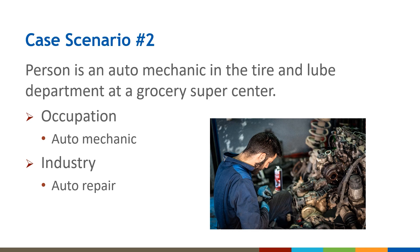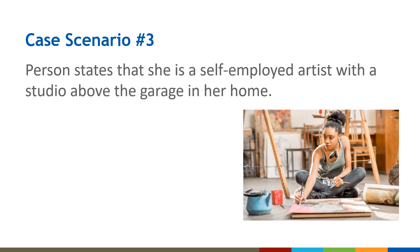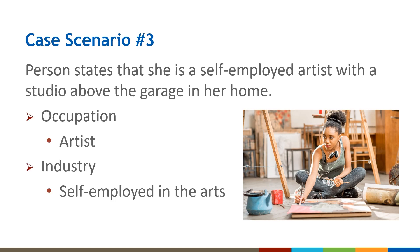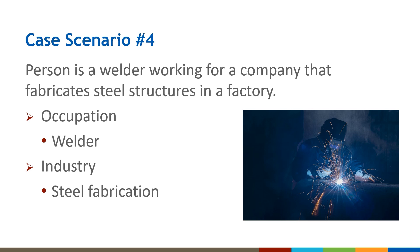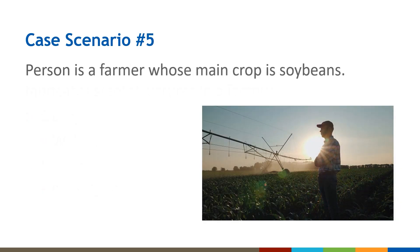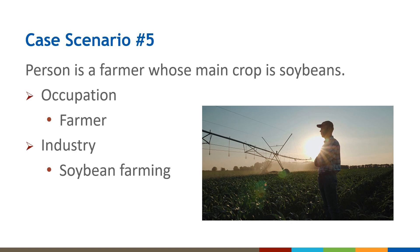In other scenarios: a self-employed artist with a studio above the garage has occupation of artist and industry of self-employed in the arts. A welder working for a company that fabricates steel structures has occupation of welder and industry of steel fabrication or steel product manufacturing. A farmer whose main crop is soybeans has occupation of farmer and industry of soybean farming — it's important to distinguish between livestock and crop farming. Also note that farmer is different from farm worker or farm hand.